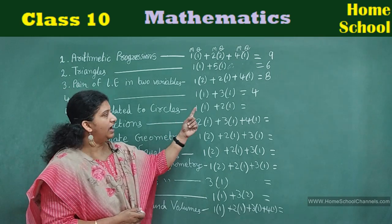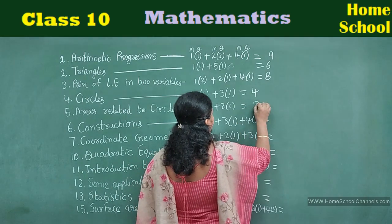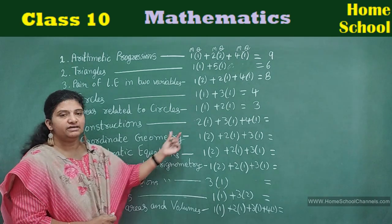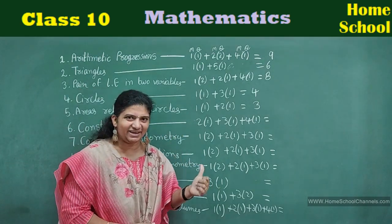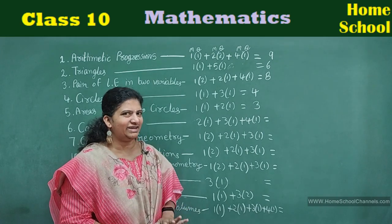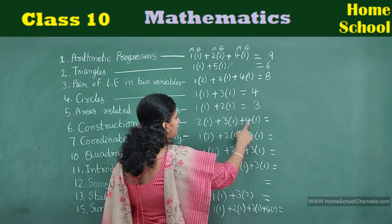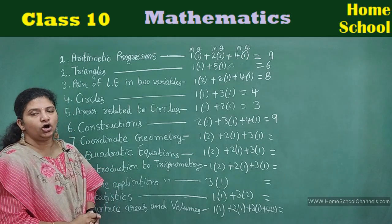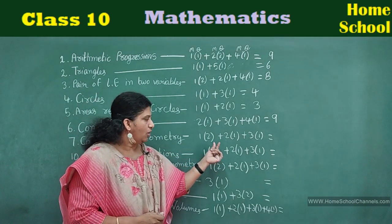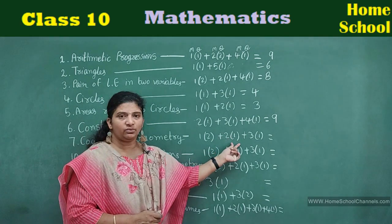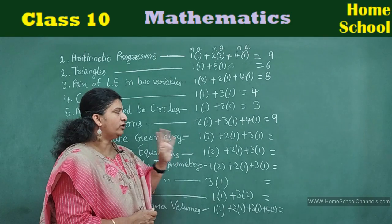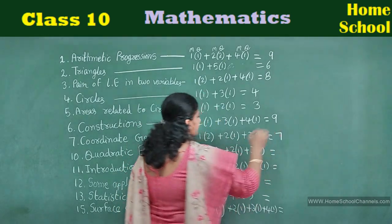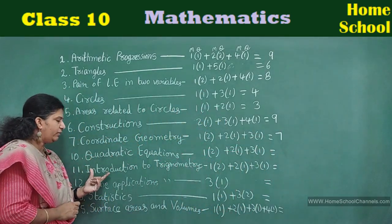For Constructions: 2-mark — 1 construction, 3-mark — 1 construction, 4-mark — 1 construction. Total: 2 + 3 + 4 = 9 marks. For Coordinate Geometry: 1-mark — 2 questions, 2-marks — 1 question, 3-marks — 1 question. Total: 2 + 2 + 3 = 7 marks. For Quadratic Equations and Introduction to Trigonometry: total 7 marks each.